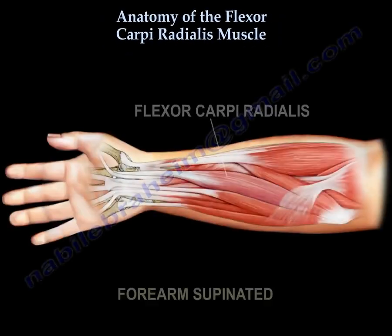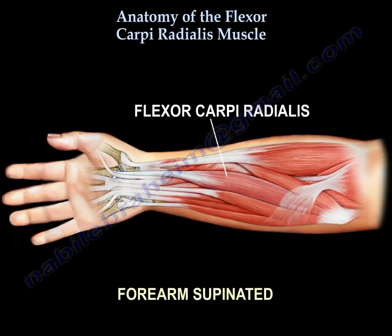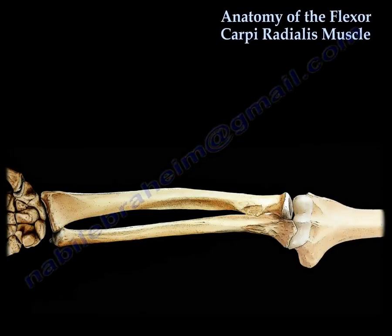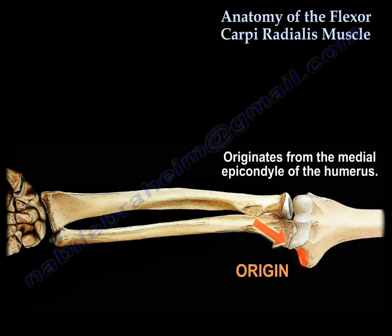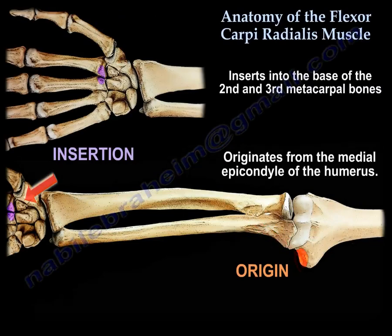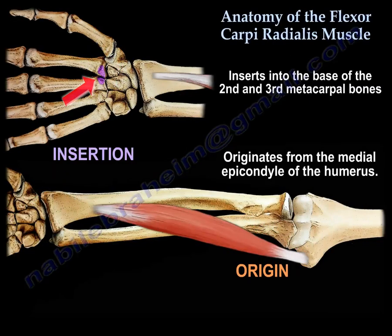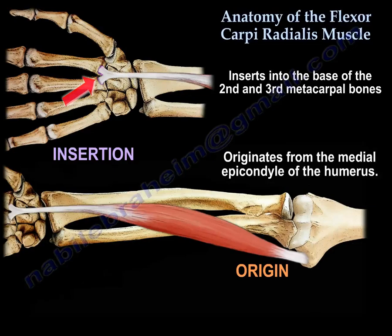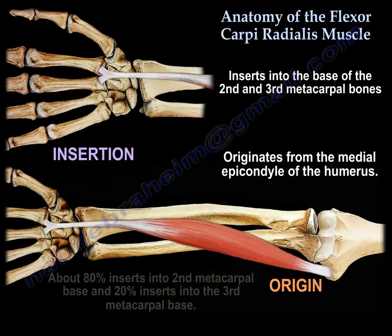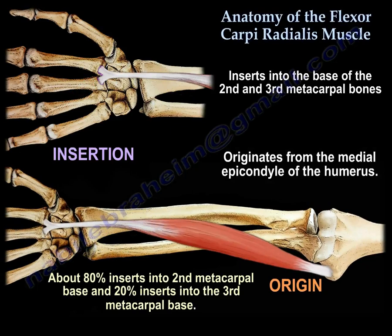Anatomy of the flexor carpi radialis muscle. Origin: from the medial epicondyle of the humerus. Insertion: it inserts into the base of the second and third metacarpal bones — approximately 80% of the tendon inserts into the second metacarpal base and about 20% into the third metacarpal base.